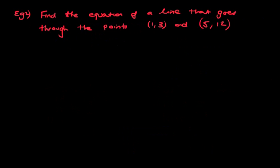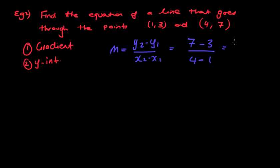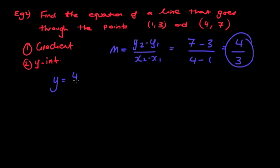Sometimes the question gets trickier — we are not given the original gradient. Our next question is slightly different because we are given two coordinates and no gradient. Remember, the first thing I need to do is find my gradient, and the second is find my y-intercept. My gradient can be found using y2 minus y1 over x2 minus x1. In this case: 7 take away 3 over 4 take away 1, which is 4 over 3. So I can write y equals 4 over 3 x plus b.